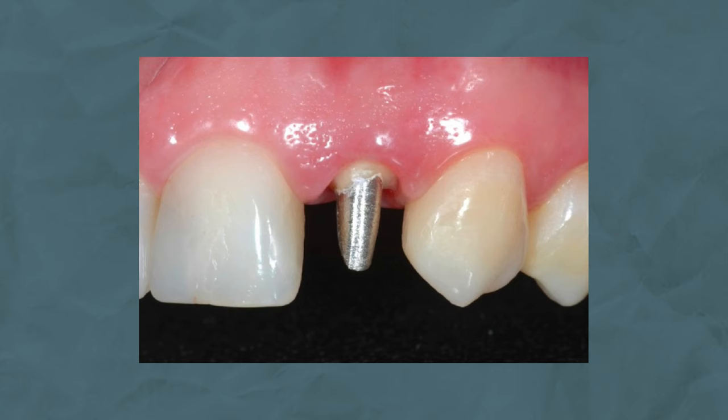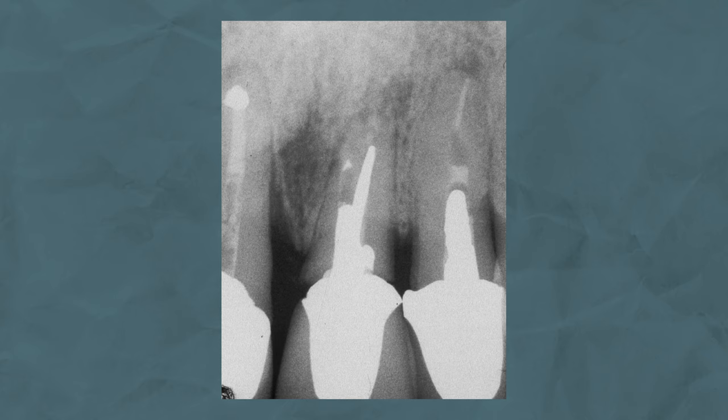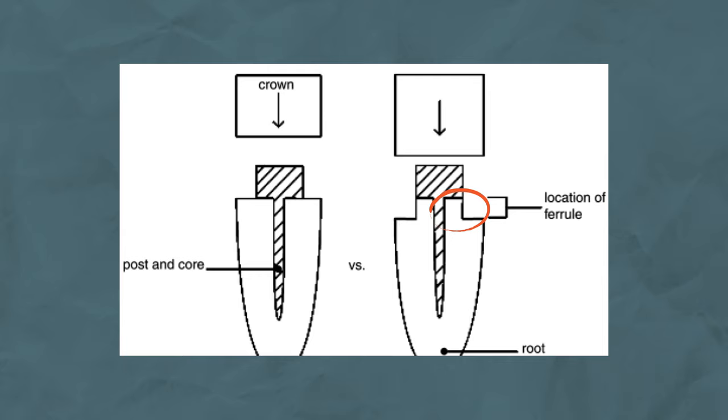Now let's move on to posts. Three millimetres of root structure apically should improve fracture resistance for teeth restored with a post and core. It's important to note that posts serve no purpose other than to hold a core — they don't reinforce the teeth; instead they actually weaken them. Long and parallel posts are generally better than tapered and screw posts. A ferrule of 1.5 to 2 millimetres is needed, and the greater the height, the greater the resistance features you will have with the crown. Posts can be prefabricated or cast in a lab.